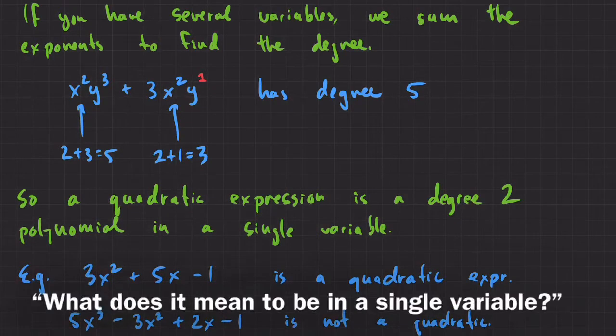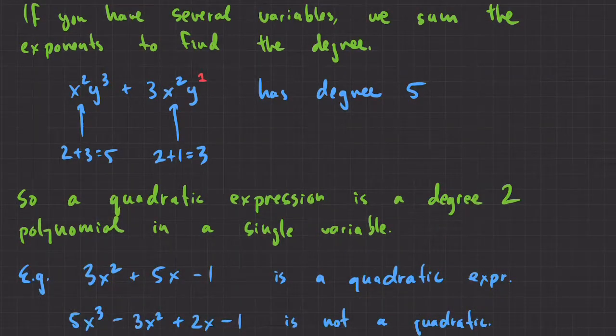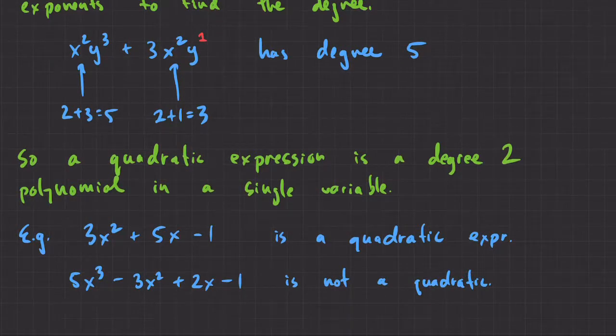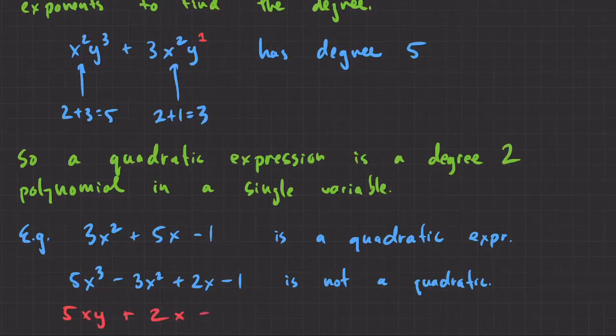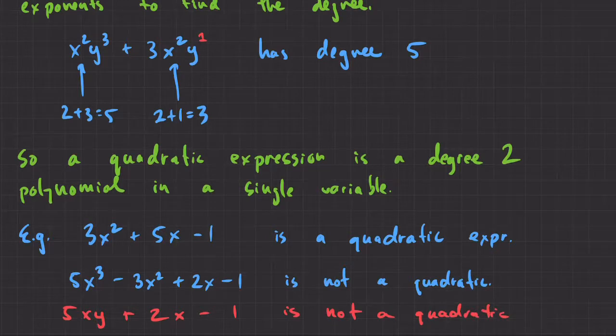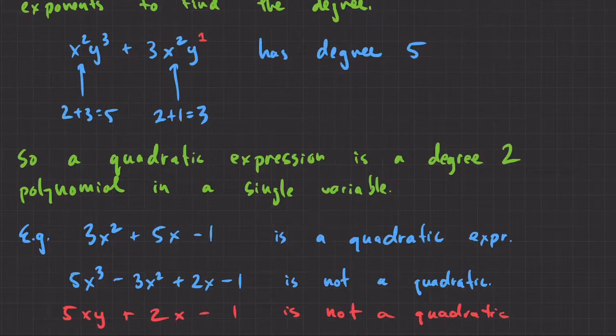For what it's worth, we call that a cubic because the highest exponent is 3. What does it mean in a single variable? It means that we only have x or we only have t as a variable. We only have one variable at a time. So, for example, 5xy plus 2x minus 1 is not a quadratic. Even though it's a polynomial with degree 2, it's not a quadratic because we've got several variables to worry about.